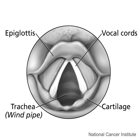Linguolabial consonants are made with the blade of the tongue approaching or contacting the upper lip. Like labial articulations, the upper lip moves slightly towards the more active articulator. Articulations in this group do not have their own symbols in the International Phonetic Alphabet; rather, they are formed by combining an apical symbol with a diacritic, implicitly placing them in the coronal category. They exist in a number of languages indigenous to Vanuatu such as Tangoa, though early descriptions referred to them as apical labial consonants. The name 'linguolabial' was suggested by Floyd Lounsbury, given that they are produced with the blade rather than the tip of the tongue.